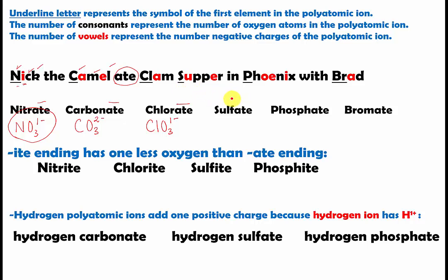The next word is 'supper,' which stands for sulfate. The S is underlined for sulfur. We have one, two, three, four consonants, so there are four oxygen atoms. And there are two vowels, giving two negative charges. The formula for sulfate is SO4 two minus.